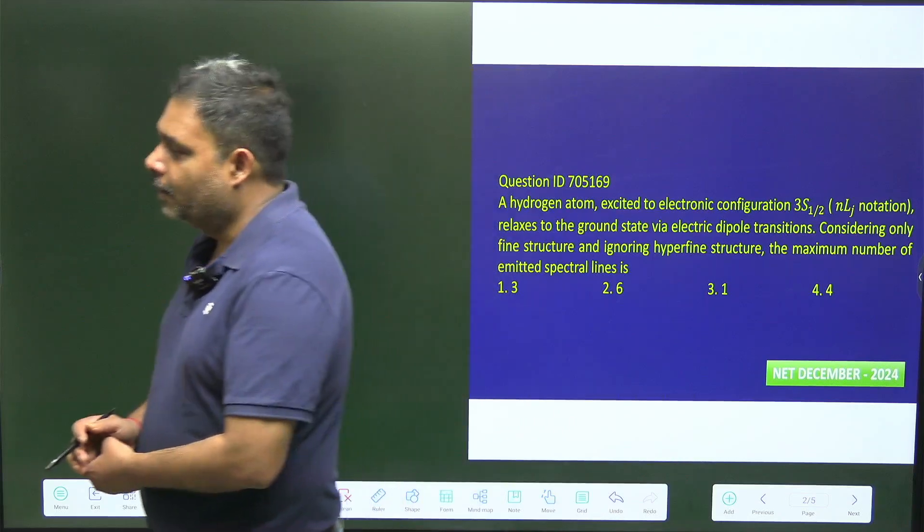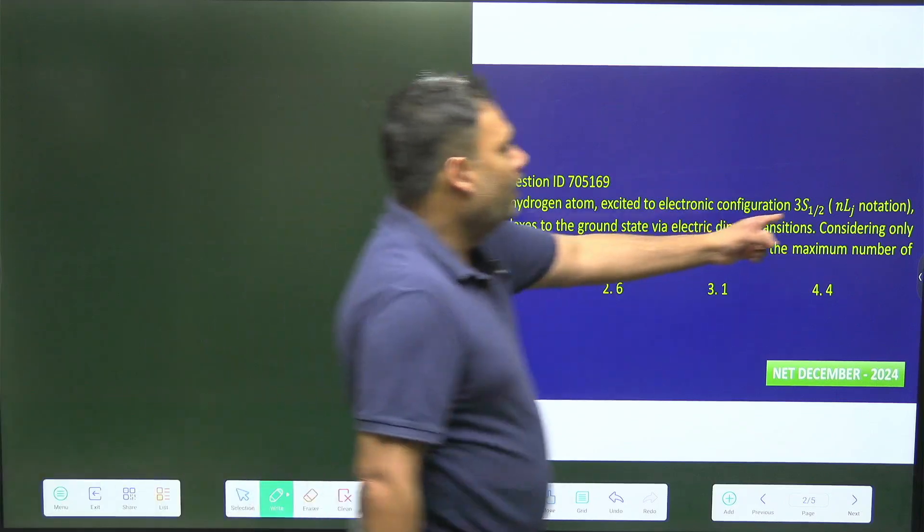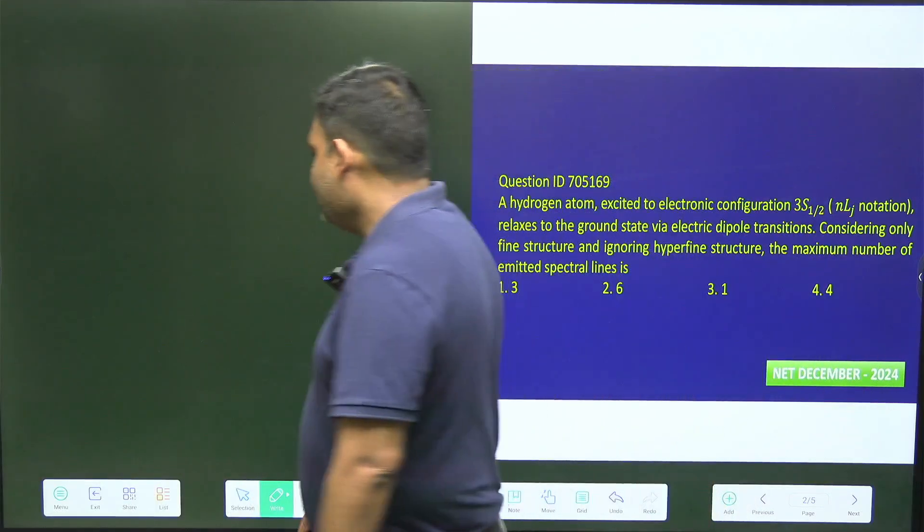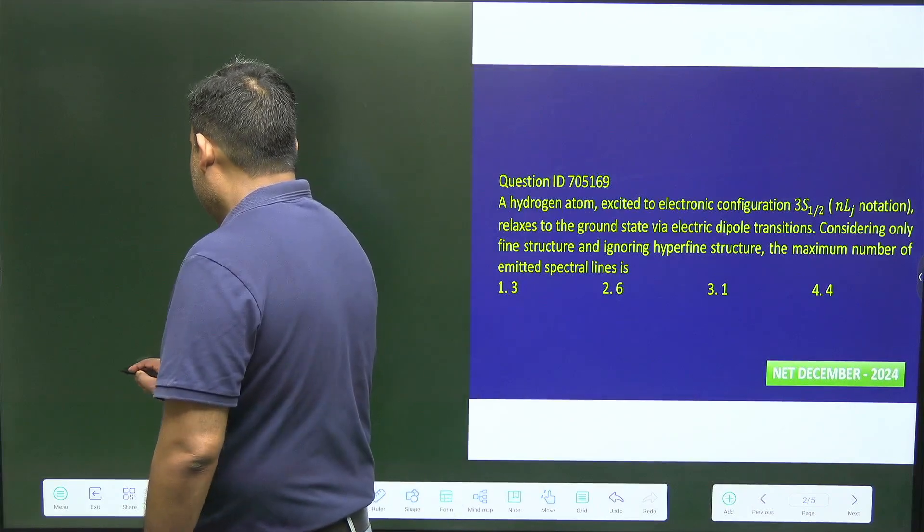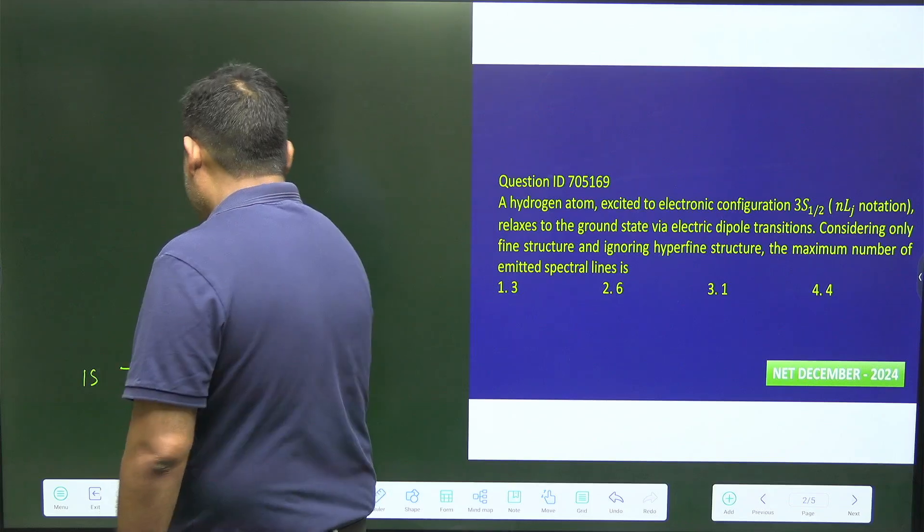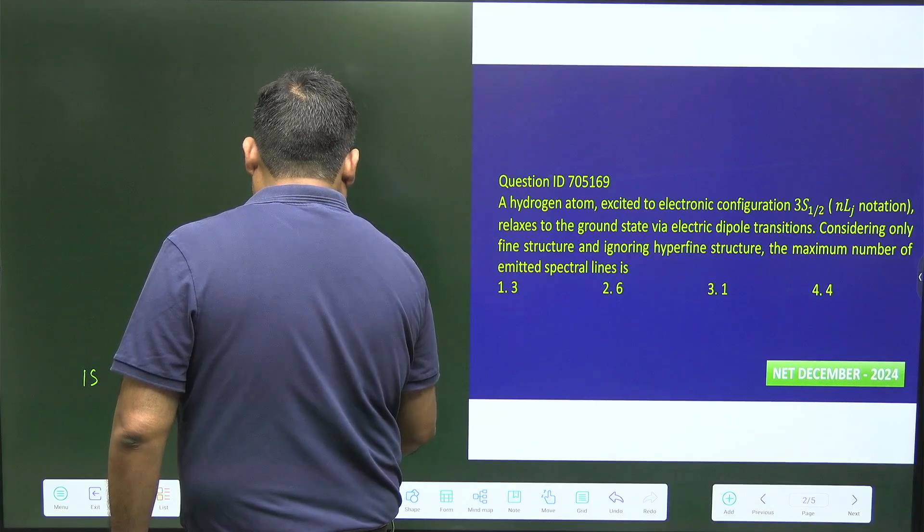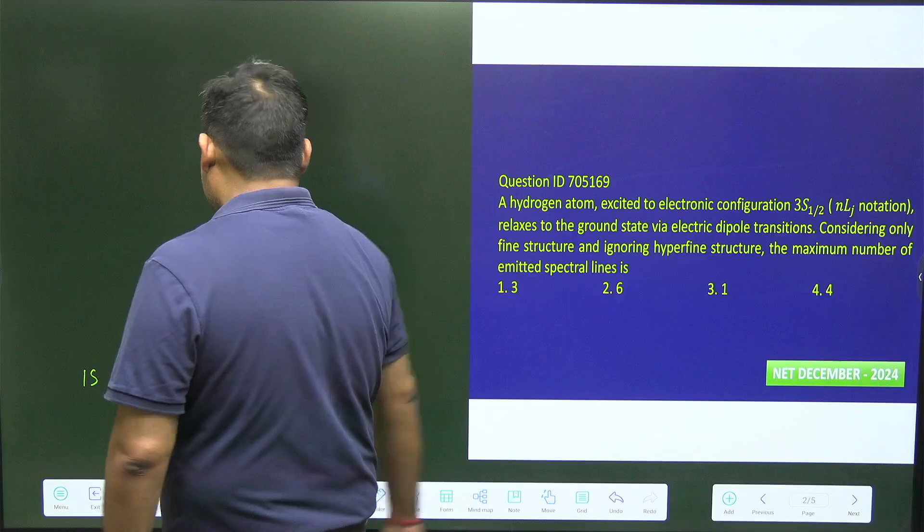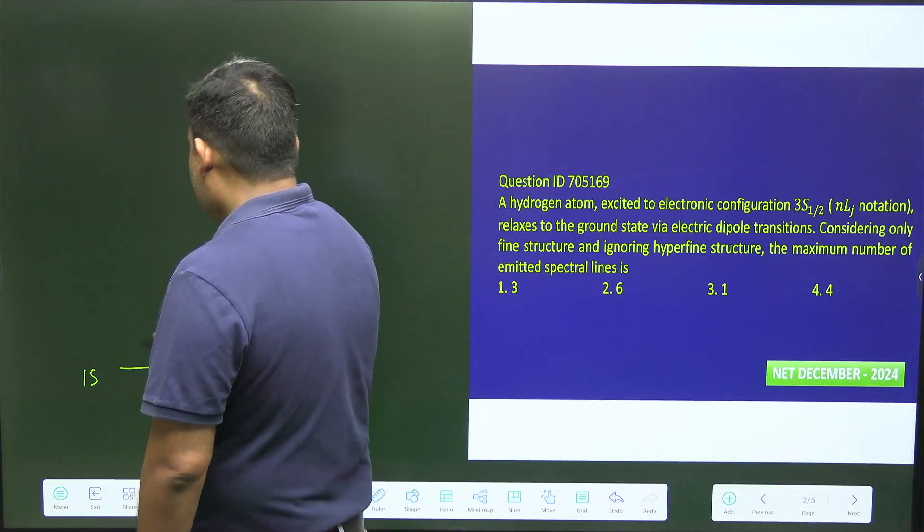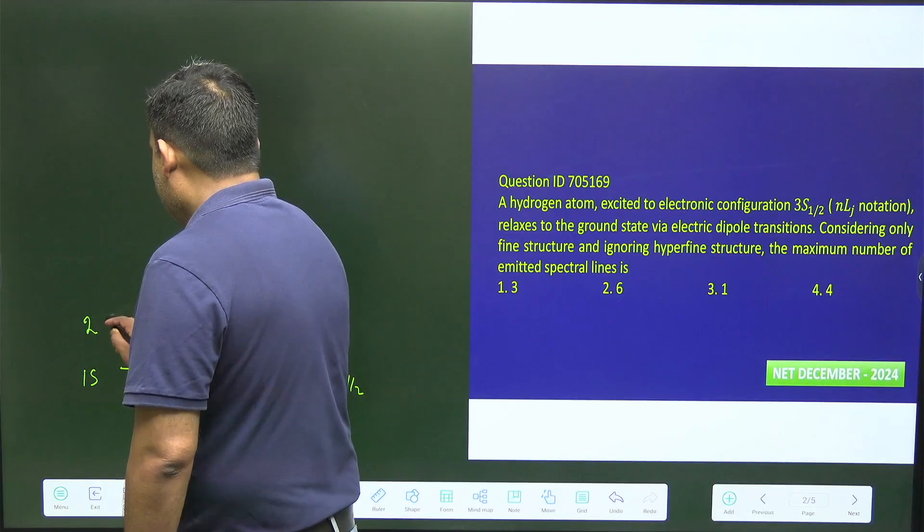So let us try to go for the different levels in this nlj form. For nlj form, the ground state is basically 1s, so this is 1s half. This is n equals 1, l equals 0. The next level is 2s.